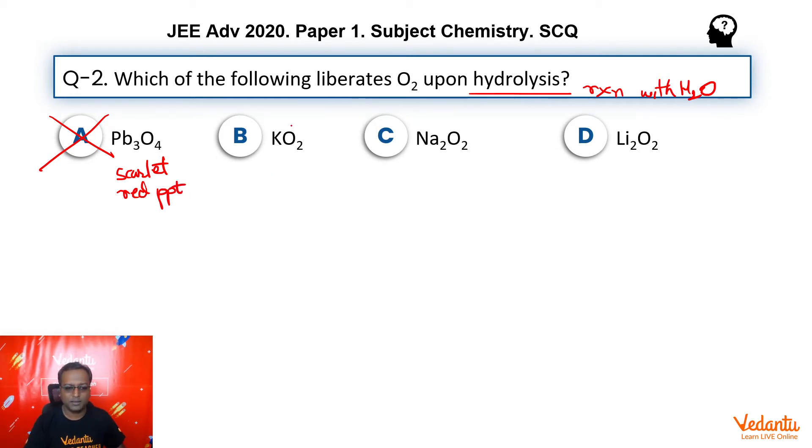Now, option B is a superoxide in which oxygen oxidation state is minus half. Option C is a peroxide in which individual oxygen oxidation state is minus one. And option D is also a peroxide in which individual oxygen oxidation state is minus one again.